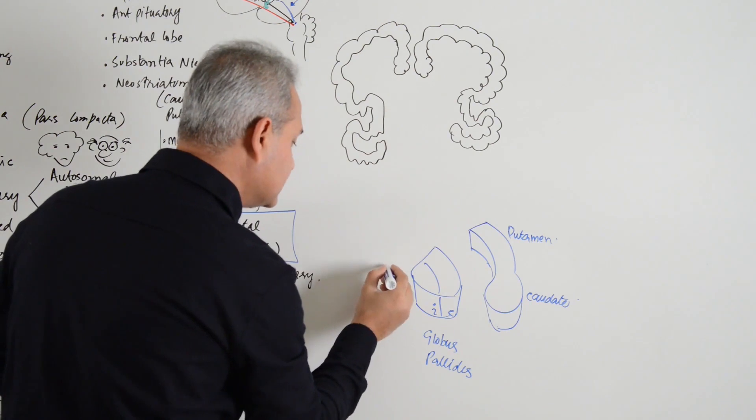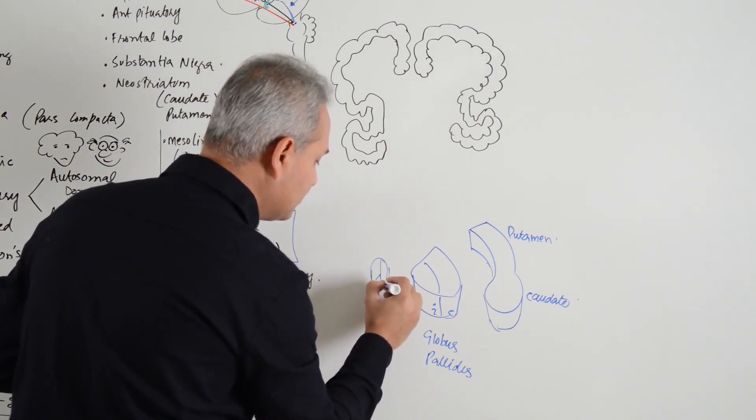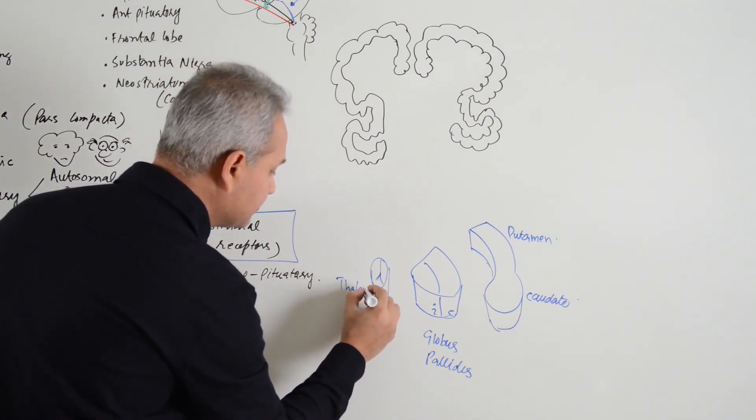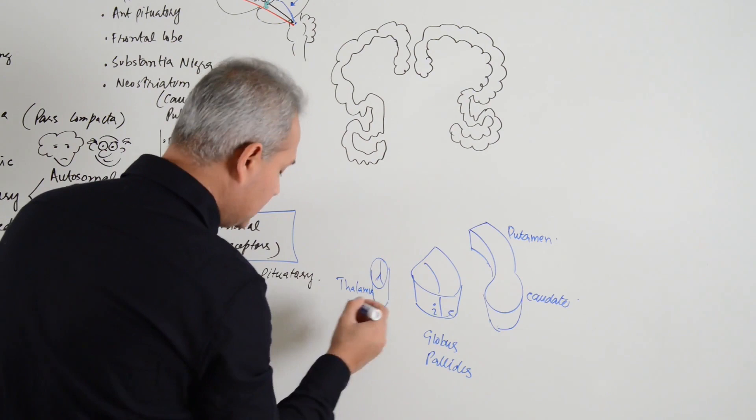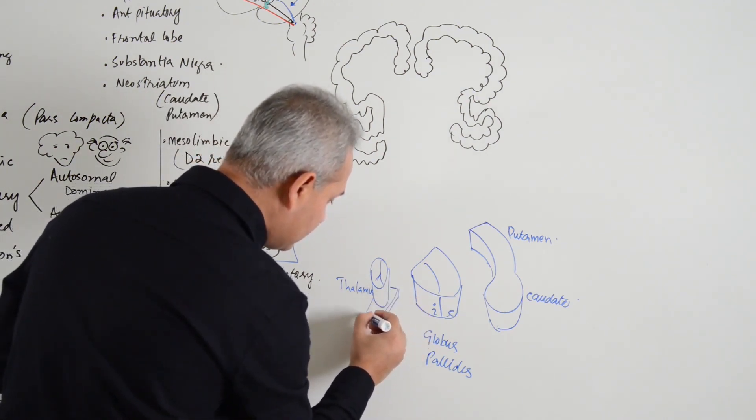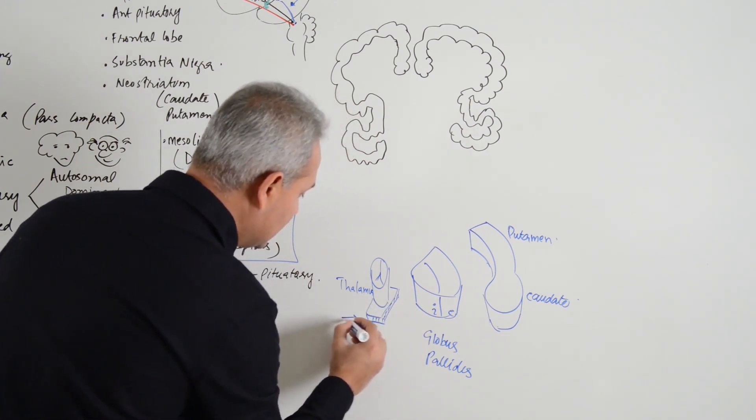Then medial to that is the thalamus, slightly dorsal and medial. I am just making that here, thalamus. And I am going to make subthalamus under the thalamus, although that is not the final anatomical position.